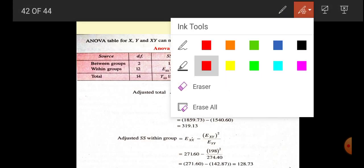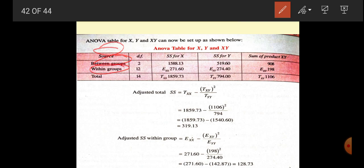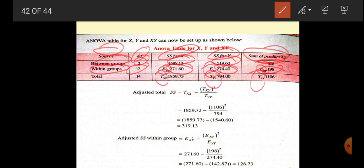Now next, we will create a table. Source between groups, within groups, DF 2 and 12, because 2 variables are there and 12 for whole data. SS for X is this, SS for Y we have got this, and SS for the XY we have got 908. Afterwards, we have within group 271.60, 274.40, and XY 198. This is the way we represent EXX, EYY, EXY, TXX total, TYY and TXY.